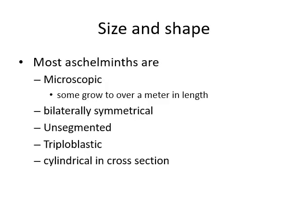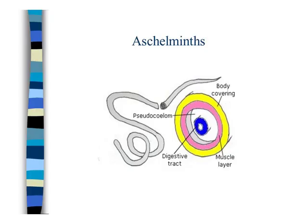Size and shape: most Aschelminthes are microscopic, some grow to over a meter in length. They have bilateral symmetry, so they have left-right portions. Their body is unsegmented — there are no segments — just like the nematode. They are triploblastic, having ectoderm, endoderm, and mesoderm — three layers — and cylindrical in cross section, having a cylindrical body. Here you can see the Aschelminthes having a cylindrical body with three membranes.